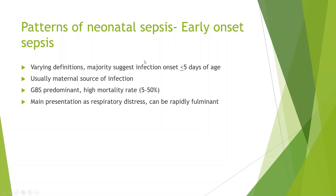Patterns of neonatal sepsis: we can categorize sepsis depending on the timing into early onset sepsis, where onset is usually less than or equal to five days of age — some definitions go up to seven days. Usually there is a maternal source of infection and group B streptococcus is a predominant cause. There is a high mortality rate of five to 50%. The main presentation is respiratory distress and it can be rapidly fulminant.